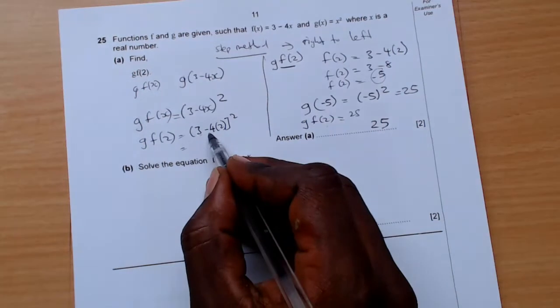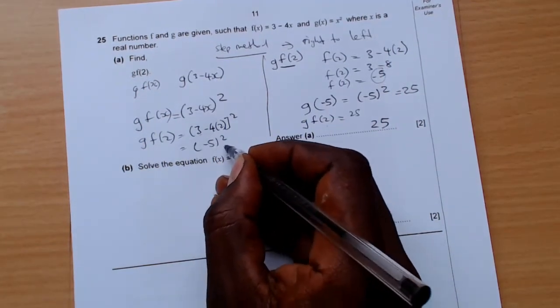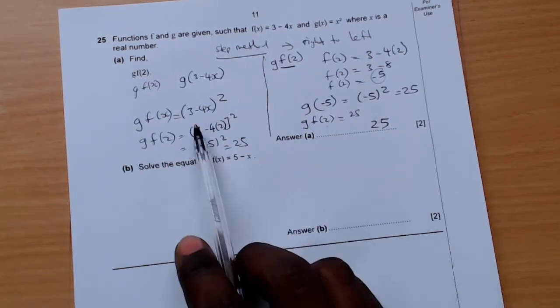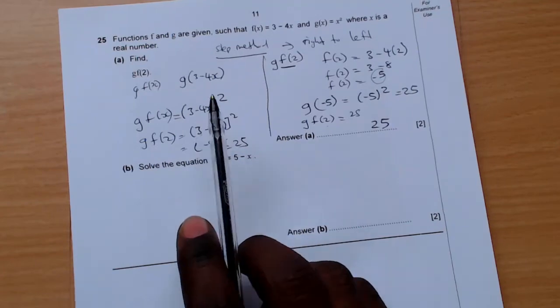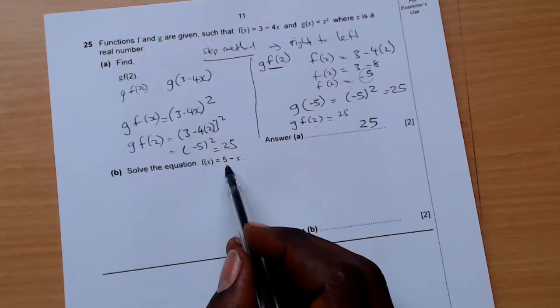3 minus 4 times 2 is 8, so it's negative 5 squared which is 25. So step method or finding g(f(x)), you get to the same answer. Solve the equation f(x) equals 5 minus x.